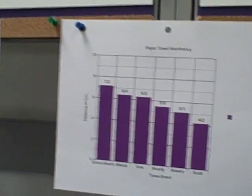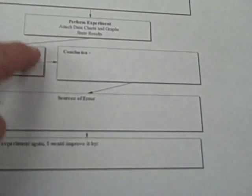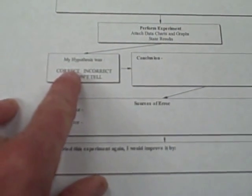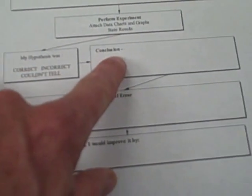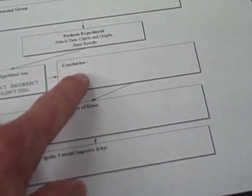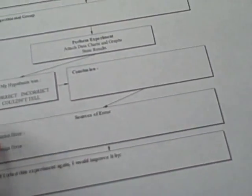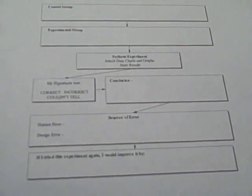Then you will need to go and figure out if your hypothesis was correct or incorrect, state your conclusion you can draw from your results, list human error, design error, and then tell me if you were going to continue this experiment or more investigation on paper towels and their adhesion, what you would think would be a good next experiment.